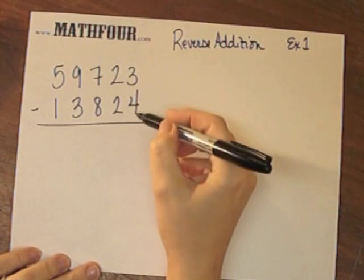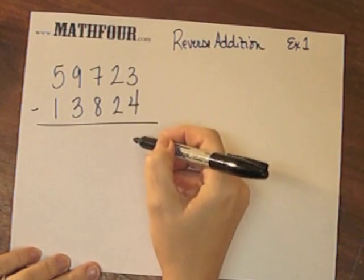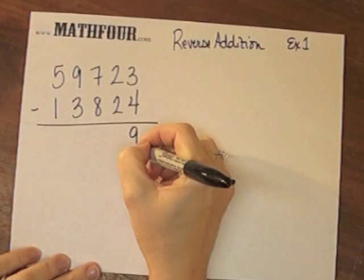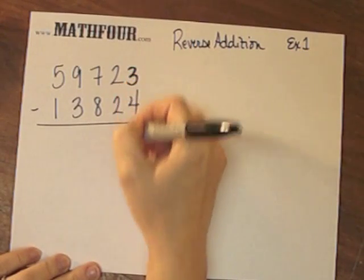So reverse addition means I say 4 plus what is going to give me 3 or 13? Well, 4 plus 9 gives me 13, carry the 1.